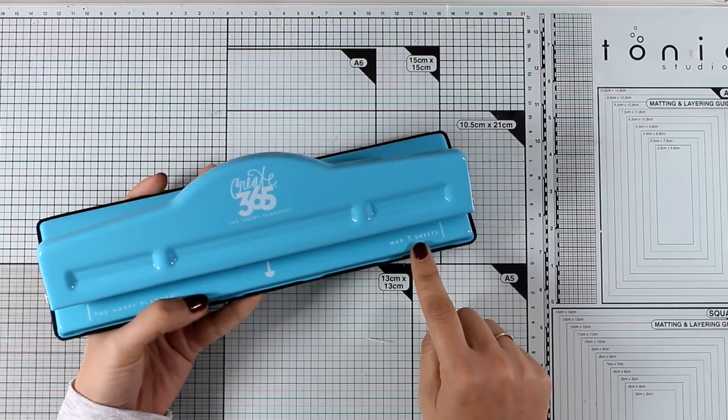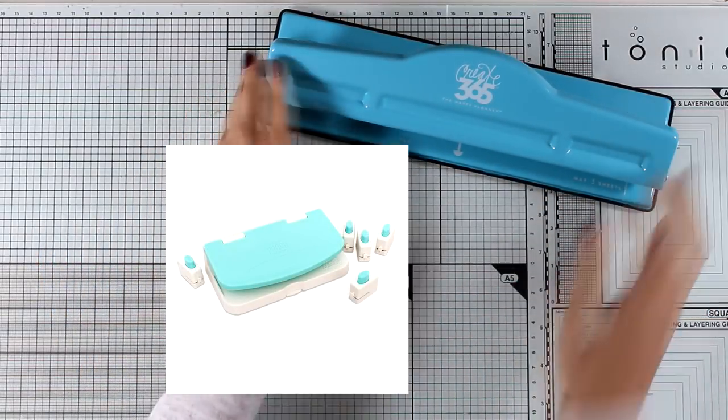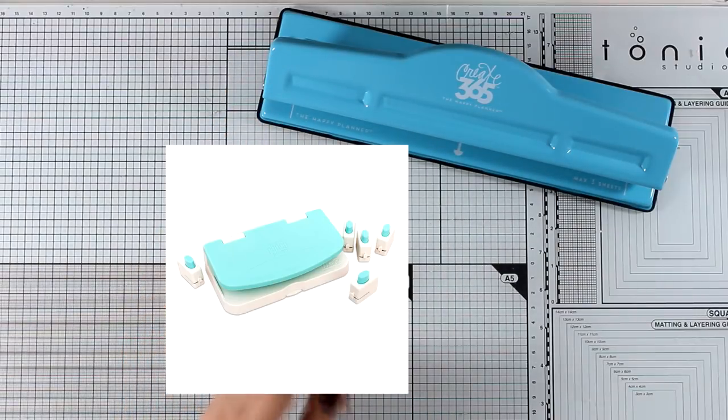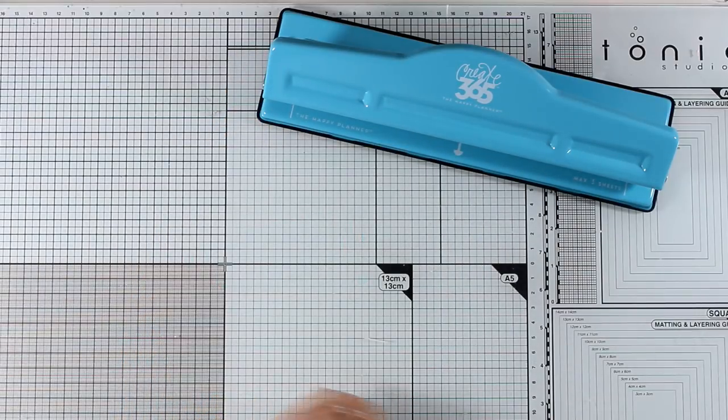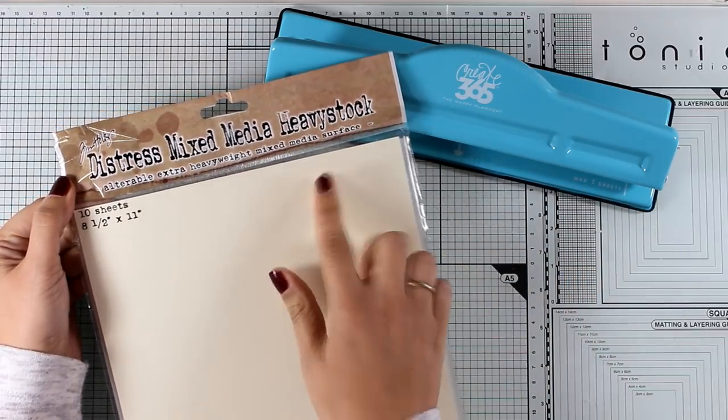You will find links down below to this punch as well as to other options. For example, We R Memory Keepers has one, and there are many others in the market. I'm just showing you the one that I have at home and I know that it works. Now you can play with this punch and work with any paper that you like.